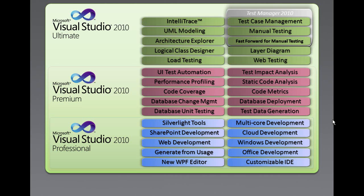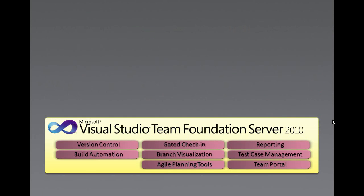Additionally, the new architecture and modeling tools are included in Ultimate, including support for authoring UML diagrams like Activity Diagram, Use Case Diagram, Sequence Diagram, Component Diagram, and Class Diagrams. There are also some additional products in the Visual Studio 2010 family.